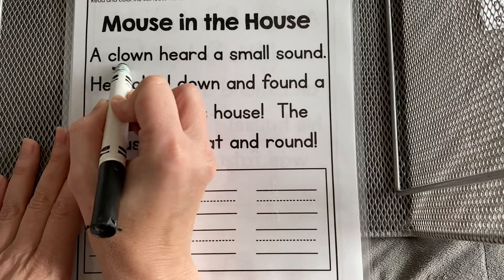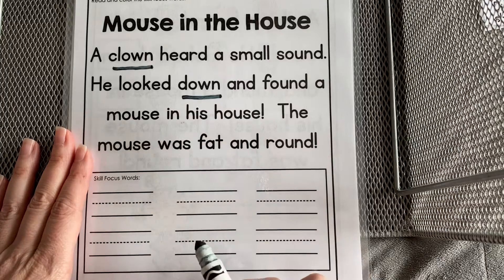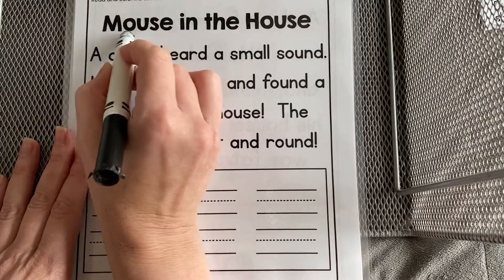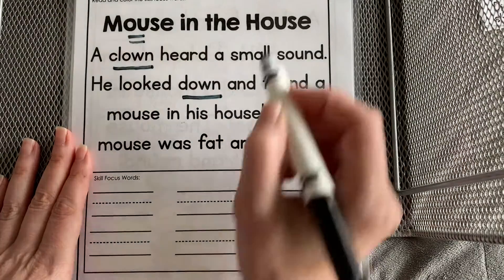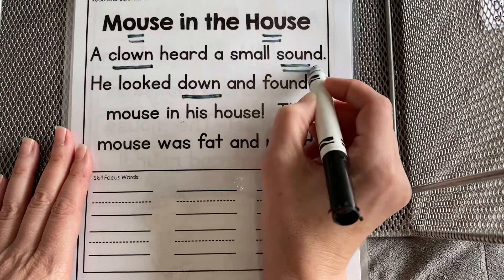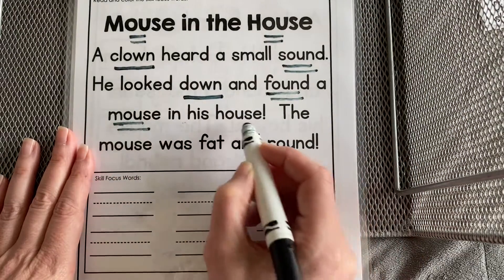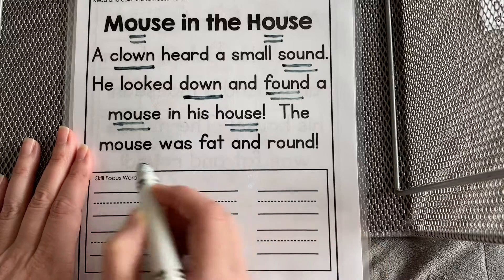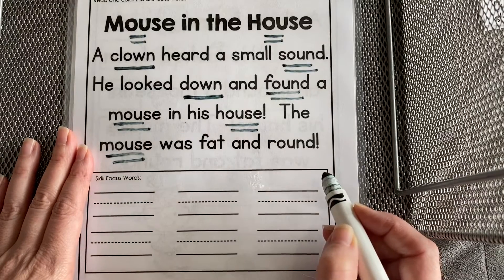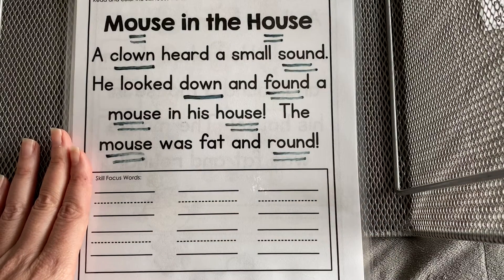Let's start with O-W. Let's look and see if we can find some O-U words, just like we see in 'mouse' and 'house.' I see 'sound,' 'found,' 'mouse,' 'house,' and 'round.' There's lots of those words! I can't wait to see your writing down below.